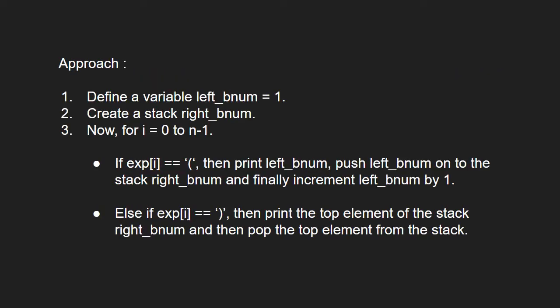Let us see the approach. We define a variable left_bnum equal to 1. Then we create a stack right_bnum. We iterate for i equal to 0 to n-1. If exp at i is equal to a left bracket, then we print left_bnum, push left_bnum onto the stack right_bnum, and finally increment left_bnum by 1.